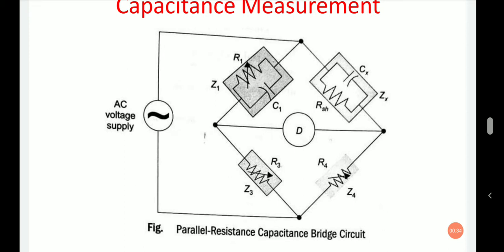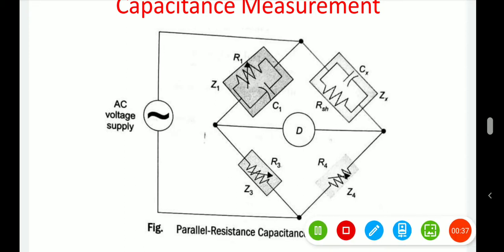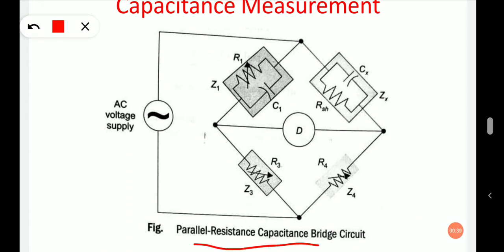The parallel resistance-capacitance bridge circuit is the most appropriate bridge when capacitances with low dielectric resistance are to be measured. Such capacitances have high dissipation factor and reasonably high leakage current. In this bridge circuit, the unknown capacitor is represented by a parallel combination of pure capacitance Cx and resistance Rsh.